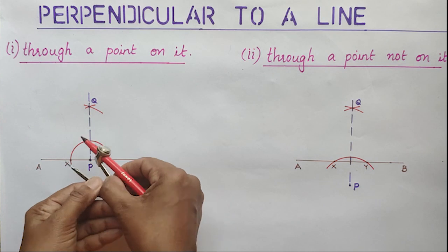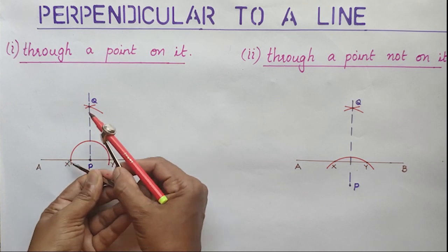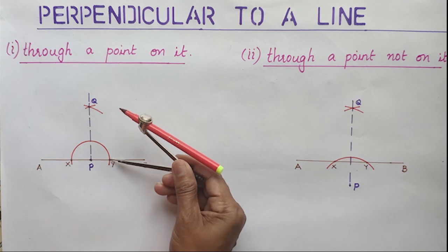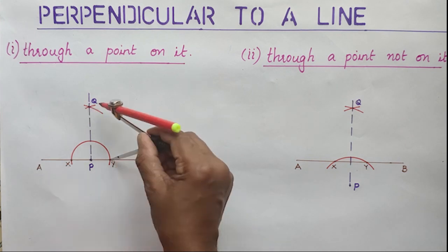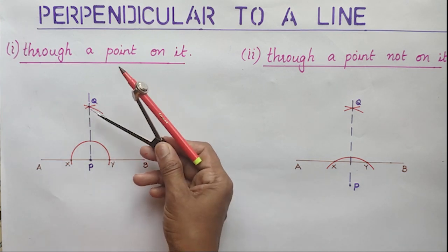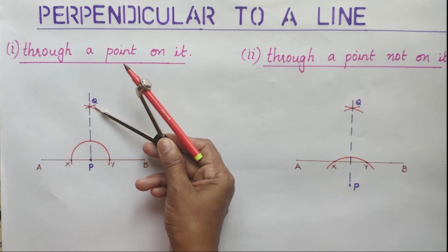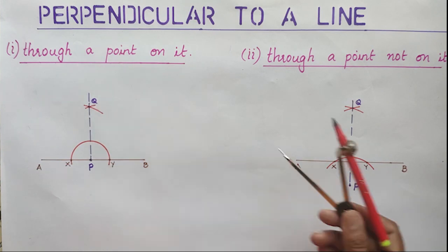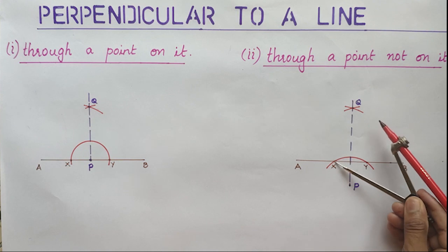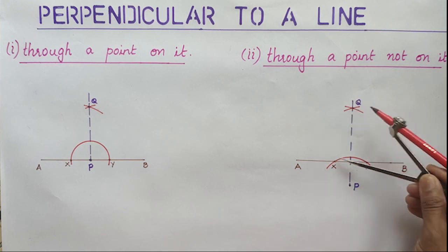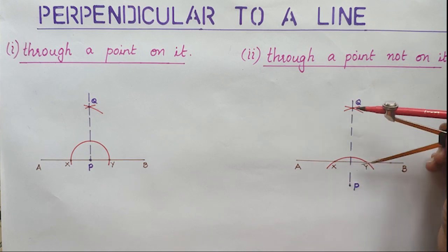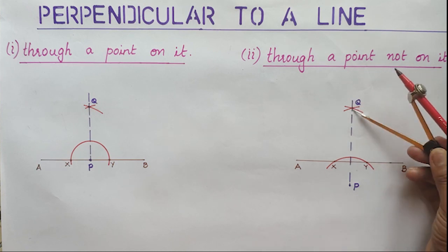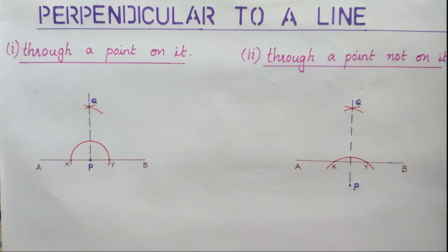Next step: place the metal tip of the compass on X, draw an arc, then without changing the compass, place the metal tip on Y, draw another arc. These two arcs cross at Q, then join P and Q — we will get the perpendicular. In the second case also, place the metal tip on X, draw an arc, without changing the compass, place the metal tip on Y, draw another arc — it crosses at Q. Join P and Q.